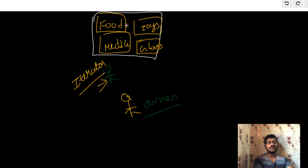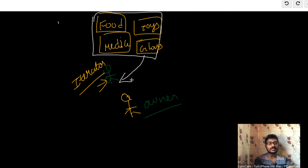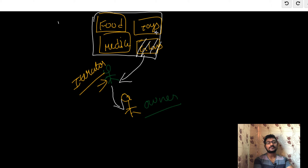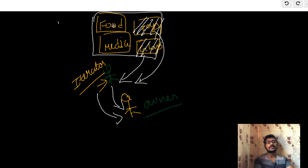First, the iterator checks whether the container has anything in it — yes, it initially contains food, toys, medicine, and glass. He accesses the topmost item sequentially: first he accesses the glass and delivers it to the owner. Then he checks whether any other packages remain — yes, food, toys, and medicine. He accesses the next package, toys, and delivers it to the owner.